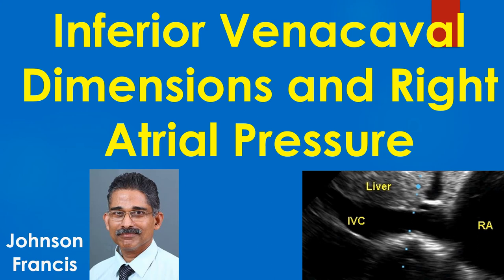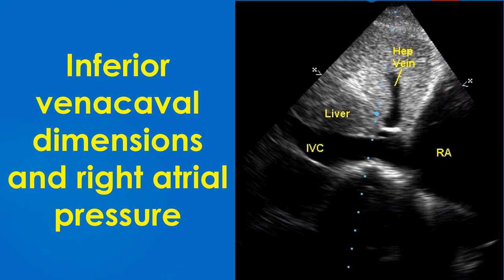There is a correlation between inferior venacaval dimensions and right atrial pressure. The IVC collapsibility index is also mentioned in this context. Inferior venacaval dimensions can be measured from the subcostal view on echocardiography.